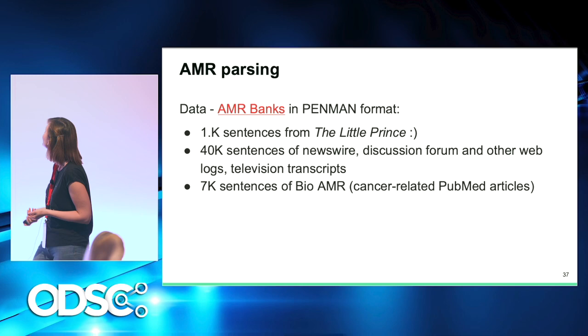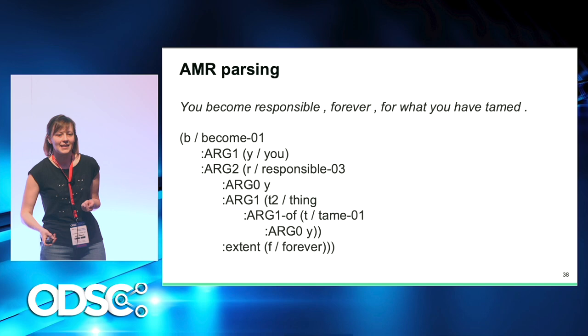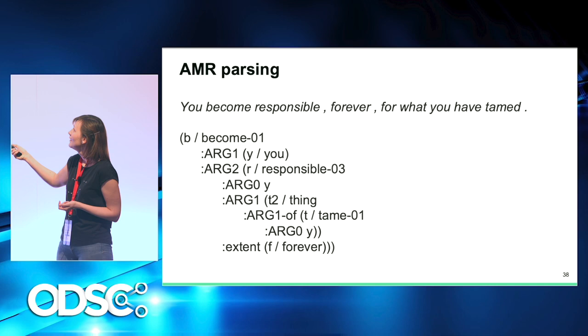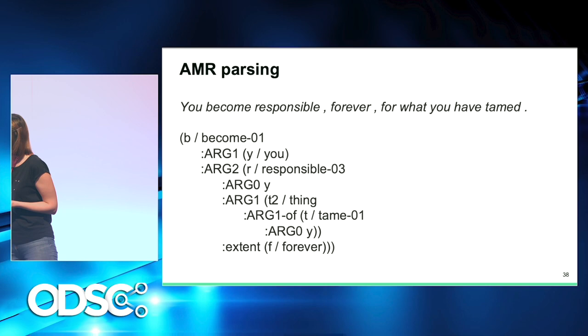A famous example from 'The Little Prince': 'You become responsible forever for what you have tamed.' The main event is becoming — you are becoming responsible. Being responsible is also an event, and we reuse 'you' for being responsible. You're responsible for the thing that you tamed, and the extent — the most sad part — is forever.